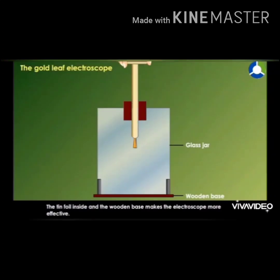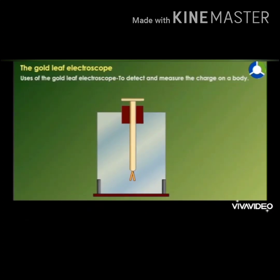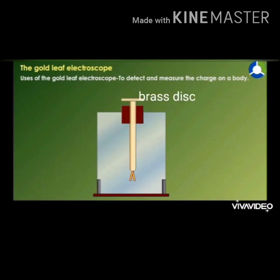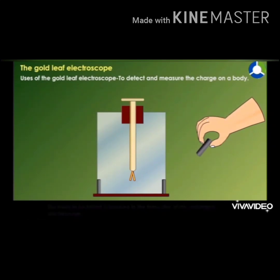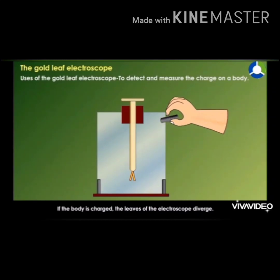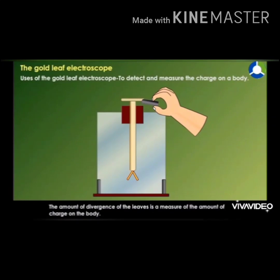Now let us study about the structure of the electroscope. An electroscope is a device used to detect the presence of electric charge on a body. This electroscope consists of a glass case, a brass disc, an insulating cap, a brass rod, and at the end of the brass rod there are two gold leaves. The body to be tested is touched to the brass disc of an uncharged electroscope. If the body is charged, the leaves of the electroscope diverge. The amount of divergence of the leaves is the measure of the amount of charge on the body.